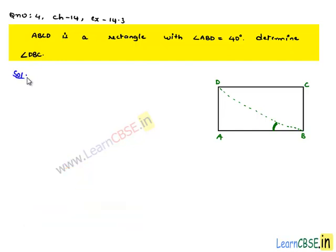Now moving on to the solution. Here it is given that ABCD is a rectangle in which BD will be the diagonal. It is given that angle ABD is equal to 40 degrees and we are asked to find angle DBC.